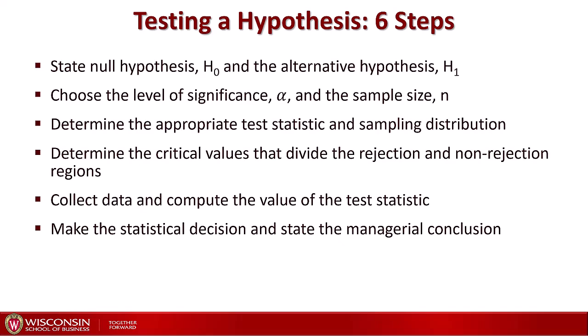First, we state the null hypothesis that we are trying to reject — we call it H0 — and then we state the alternative hypothesis that we call H1. We then choose a level of significance that we call alpha, and the sample size denoted n. Then we determine the appropriate test statistic and the sampling distribution for that specific statistic. So if the statistic is the mean, we look at the sampling distribution for a sample mean. These really depend on the problem you are approaching: whether it's a mean, the variance, or the t-statistic, each time you will have to look at a different sampling distribution.